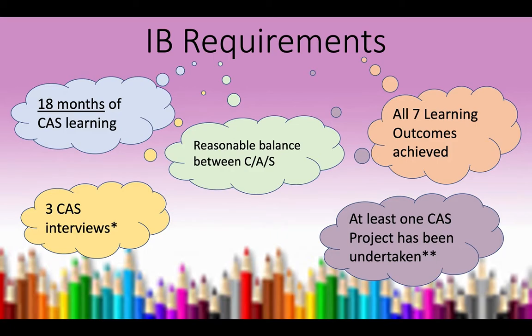So what does the IB actually expect? Students have 18 months of CAS learning — from when they start, usually September/October of DP1, continuing for 18 consecutive months without gaps, including the summer between DP1 and DP2. They expect a reasonable balance between the three strands: if a student is very active, they can have more activity experiences, but they must have some service and creativity too. This is where classroom teachers come in, as students will need inspiration to engage with different strands.